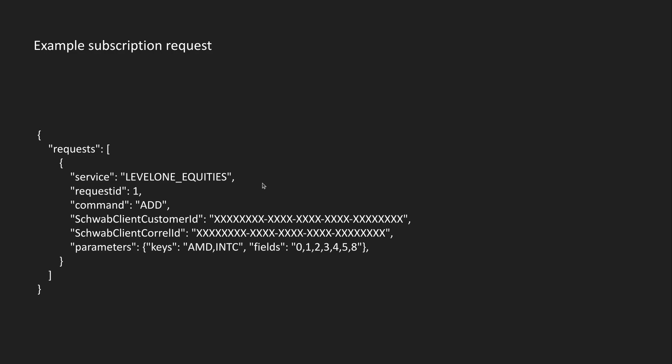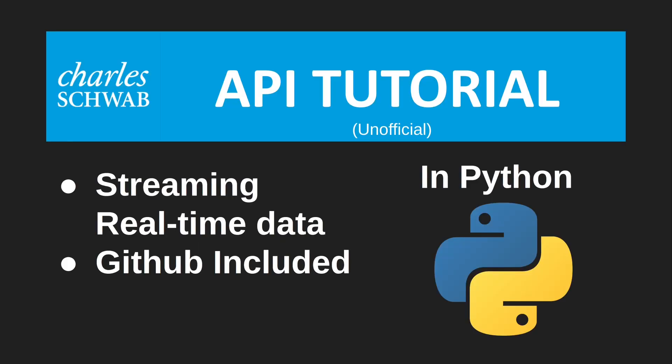If you want a more in-depth look at the code, the schwabdev package is open source, so you can use it as an example for your project. I know that the streaming from scratch section was a little bit slow, but I decided to do it this way instead of showing the code because the documentation is already there and easy to follow. I hope this video was helpful for figuring out streaming in the Schwab API. Thanks for watching.